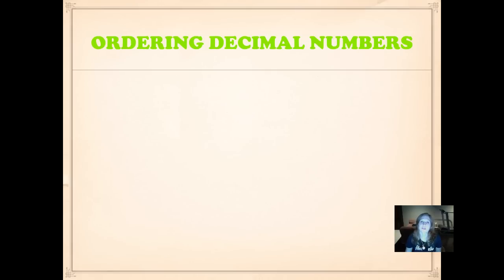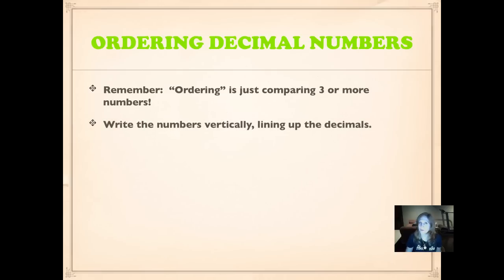Now we're going to do some ordering of decimal numbers. Remember, comparing is comparing two numbers. Ordering means that we're comparing three or more numbers. That was our vocabulary word for a couple of units back. Ordering is comparing three or more numbers. Again, we're still going to write the numbers vertically, lining up the decimals, which lines up all of our other place value positions perfectly.